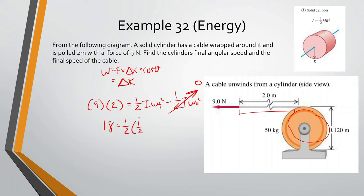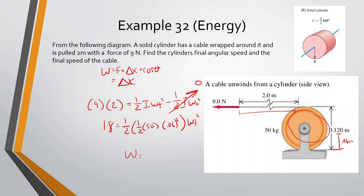So 18 = 1/2 × I × ω_final². For a solid cylinder, I = 1/2 mR², with mass 50 kg and radius 0.06 meters. Computing: 18 × 2 × 2 ÷ 50 ÷ 0.06², then take the square root, gives ω_final = 20 radians per second.